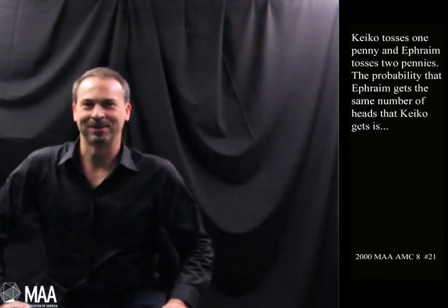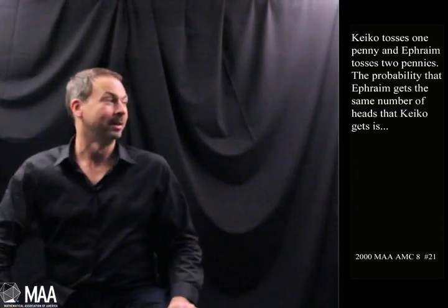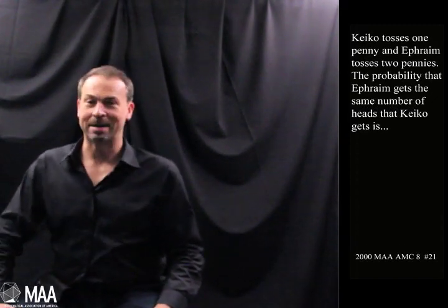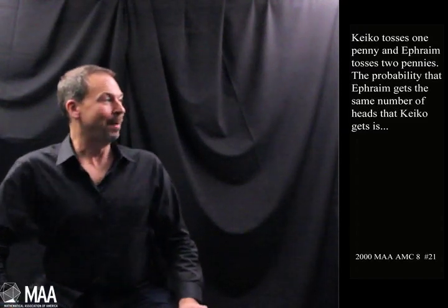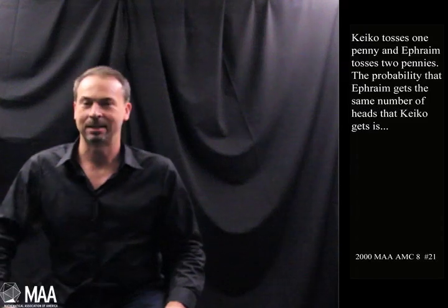G'day! Welcome to another Curriculum Burst. Here's a probability question from grade 8, and it goes as follows. Keiko tosses one penny, and Ephraim tosses two pennies. The probability that Ephraim gets the same number of heads that Keiko gets is what?